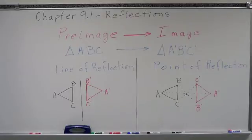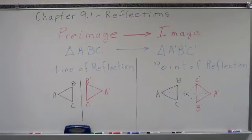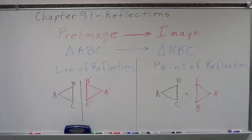Also important is the pre-image — the image before the transformation — and the image after, and how we name it. Triangle ABC, we do our transformation or reflection, and we call it triangle A prime, B prime, C prime — or A tick, B tick, C tick.